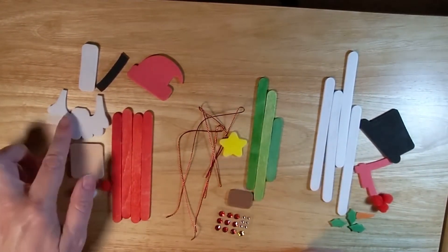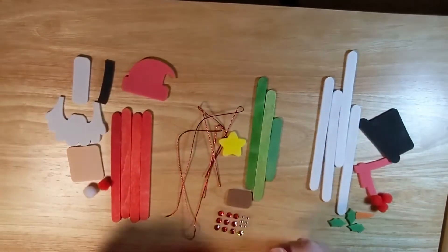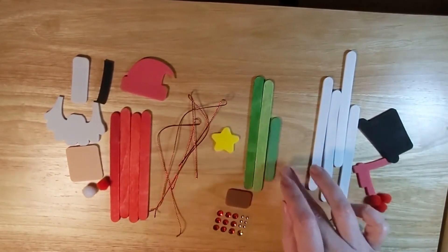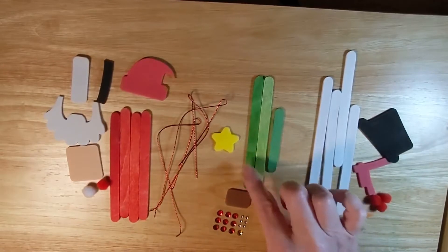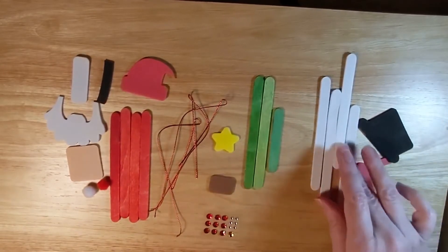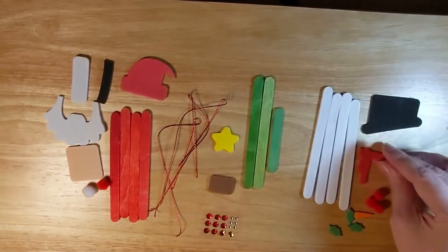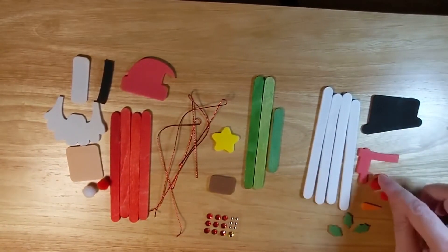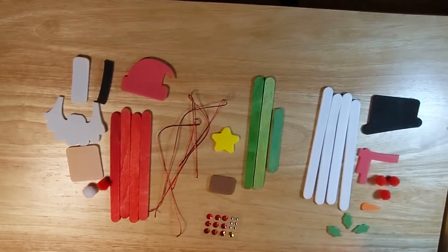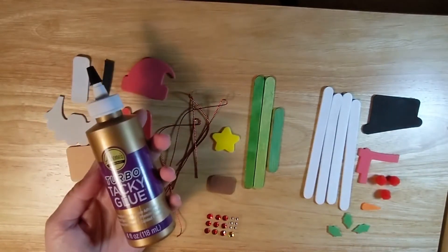You can see I'm using popsicle sticks and some cutout shapes. These happen to be in foam, and a smaller one here for the Christmas tree. I've pre-painted these but you could use felt, pom-poms, or glitter.